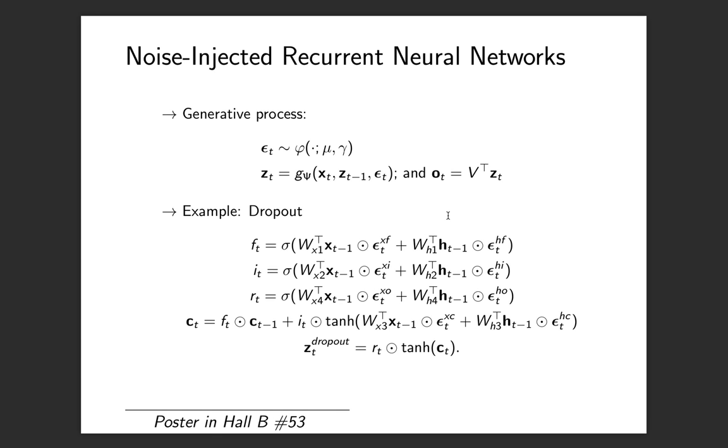One natural question now is to ask how this noise injection is done. In its most general form, noise injection in the hidden states of the RNN is done by sampling random noise epsilon_t at each time step and then computing the hidden state by not only conditioning on the previous hidden state and the previous observation, but also by conditioning on the sampled noise.